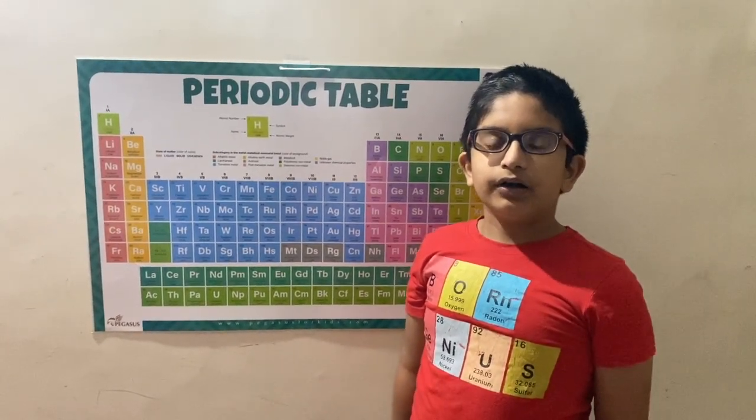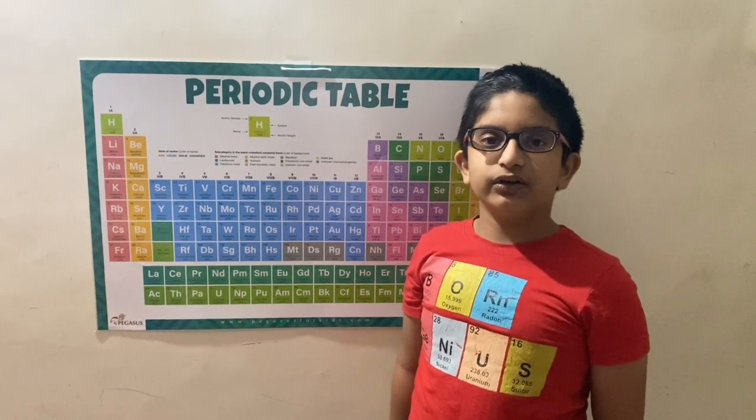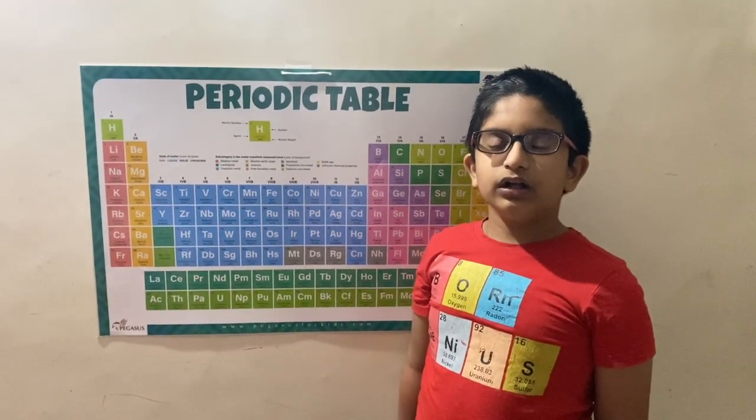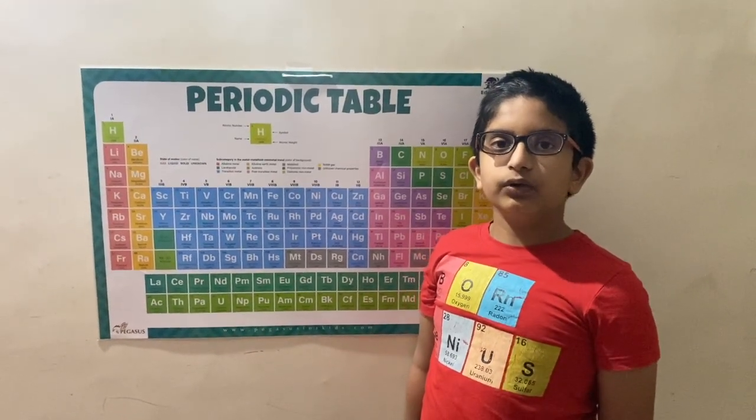A row in the periodic table is called a period and a column is called a group.